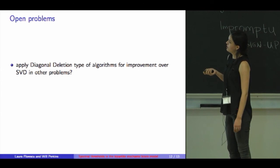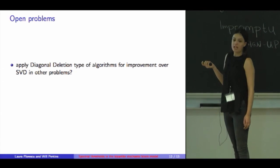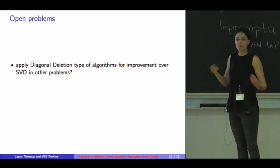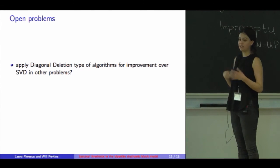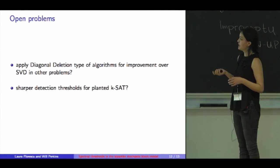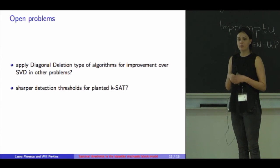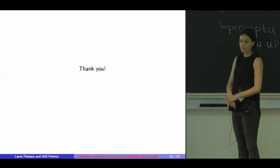Finally, this simple diagonal deletion algorithm works well here. Is there hope to do something for other planted problems? And secondly, for the planted K-SAT problem, can we still do better with another reduction, maybe? Thank you.